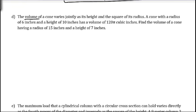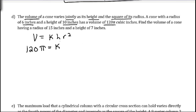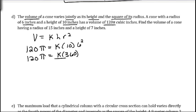The volume of a cone varies jointly as the height and the square of its radius, so V equals K times H times R squared. The radius is 6, the height is 10, and the volume is 120 pi. So 120 pi equals K times 10 times 6 squared. We have 120 pi equals K times 36 times 10, which is 360. Divide both sides by 360 and we get K equals pi over 3.